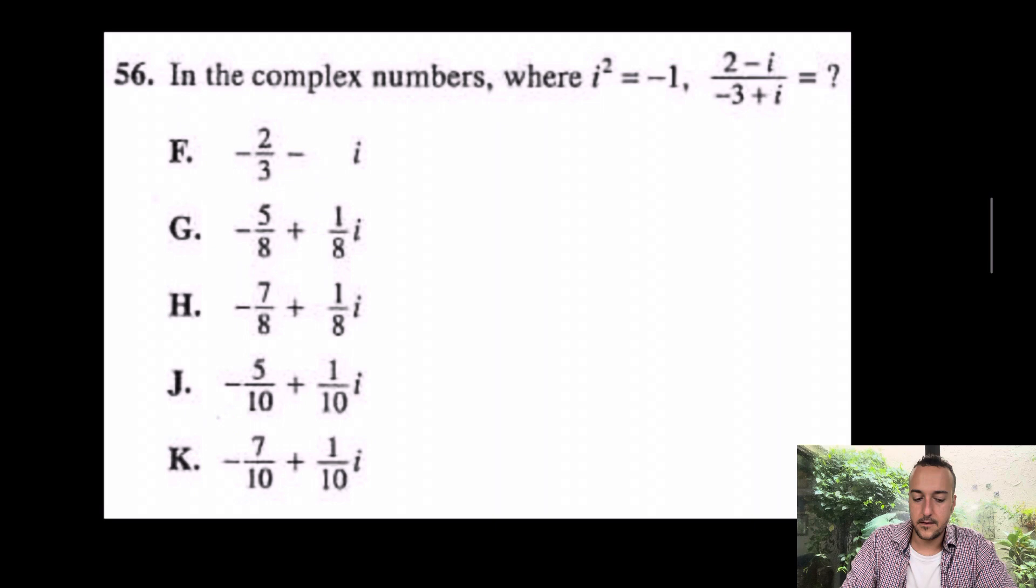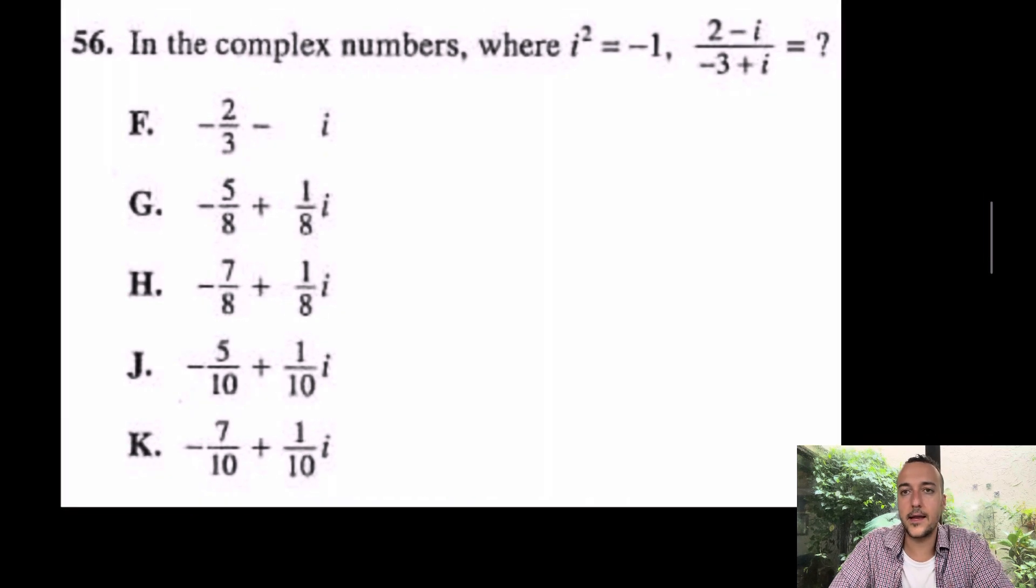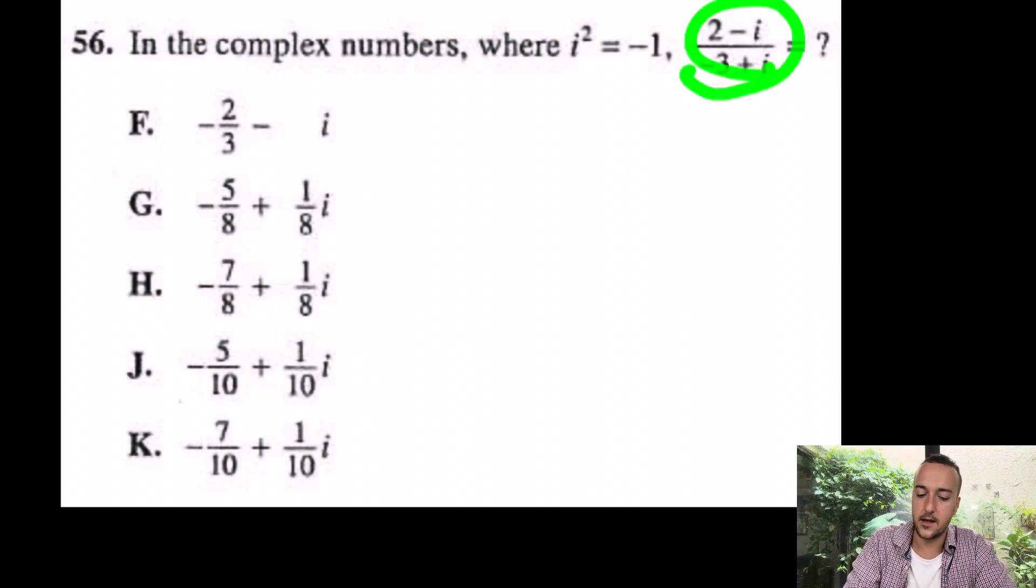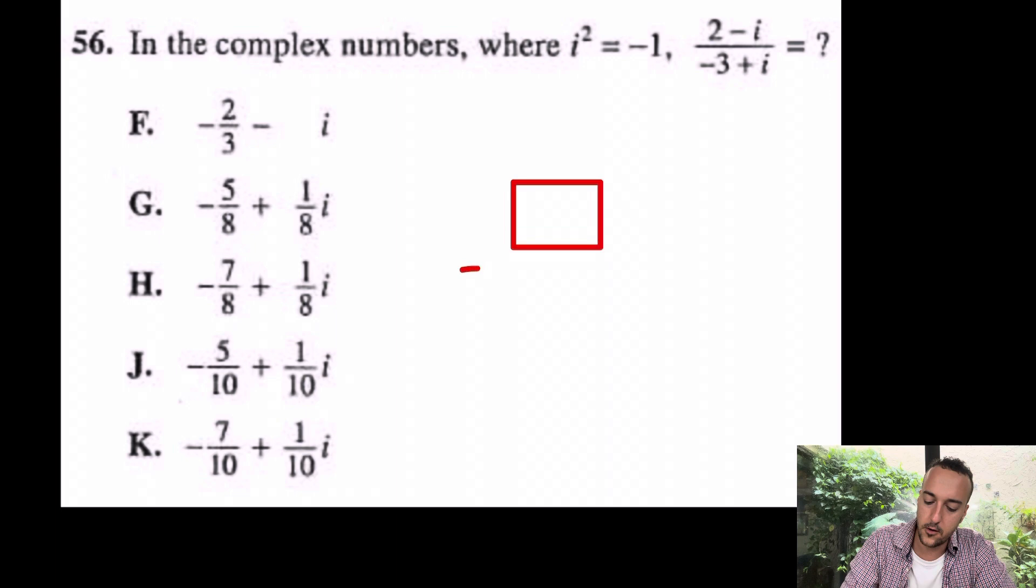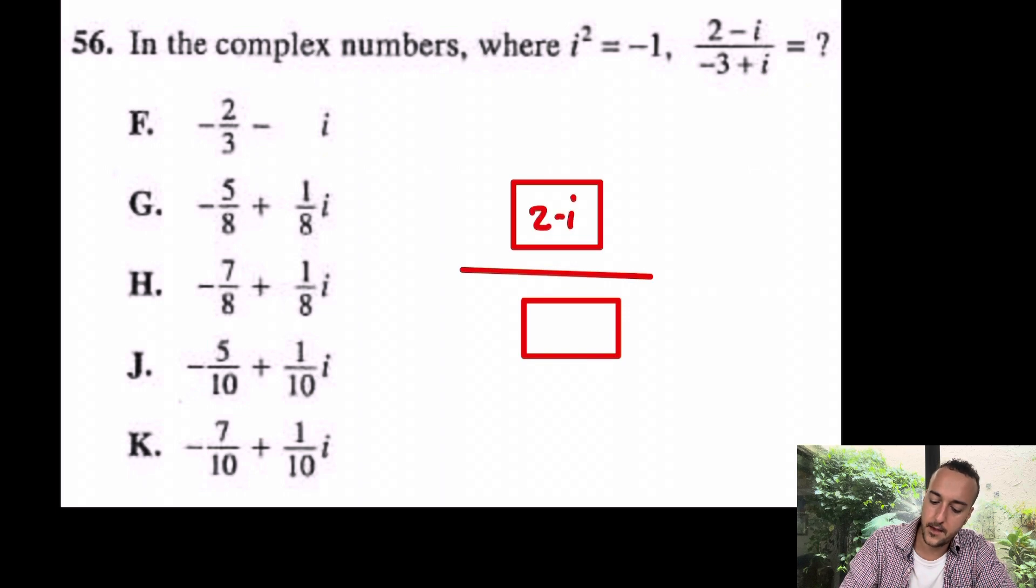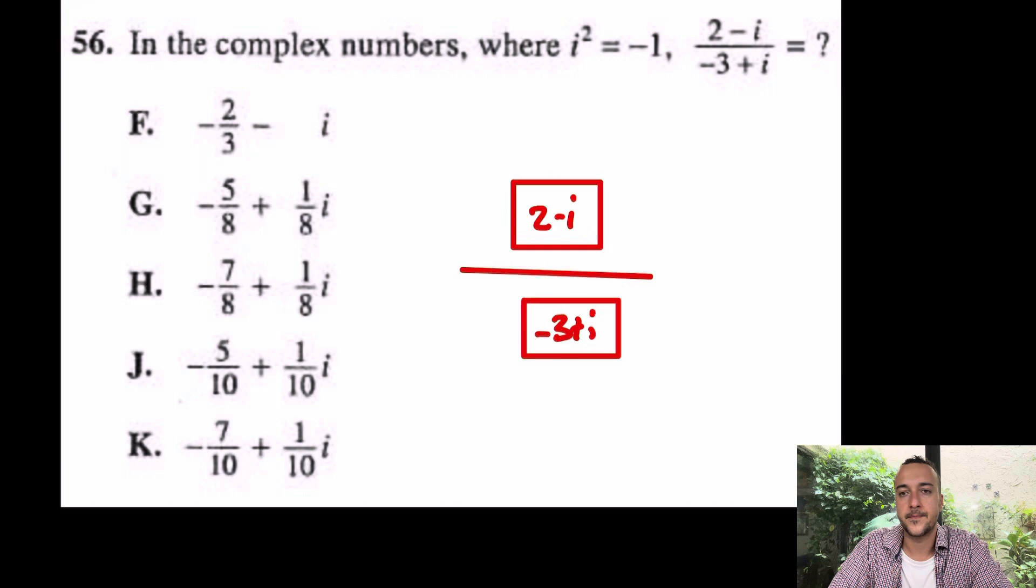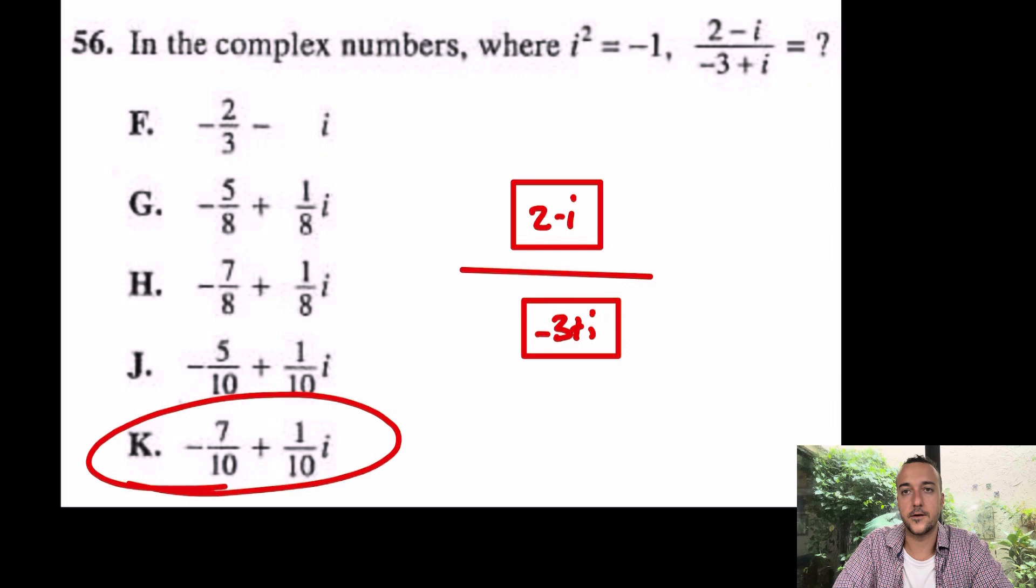Come over here and try 56. And this trick works for any imaginary number questions on the ACT. Let's try this one. Well, this one actually is a fraction. In that case, what are we going to do? We're going to use that cool little hack. We're going to make that fraction bar that we talked about earlier. So make your beautiful fraction bar, and then just fill it in. Fill it in with 2 minus i, and then negative 3 plus i. On your home screen, you're going to press enter, and voila, the answer is K.